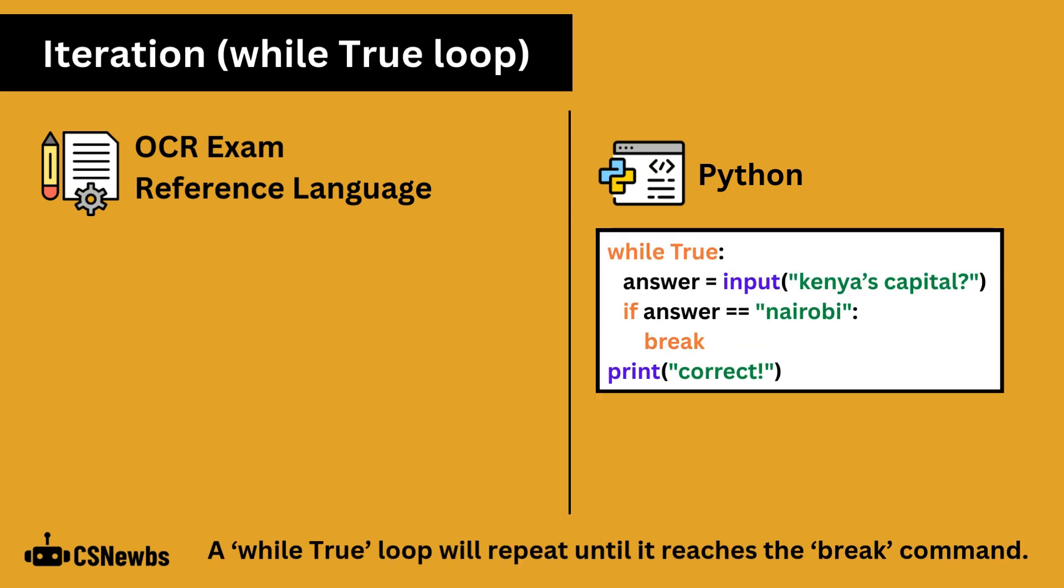While true loops are not covered in the OCR specification, but they are a valid and helpful alternative method of writing a while loop. A while true loop will repeat until it reaches the break command. True is a Boolean value, so it requires a capital T.